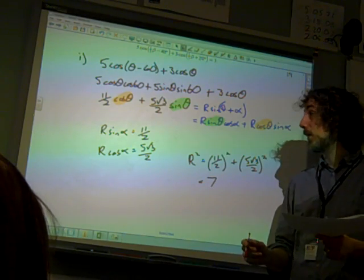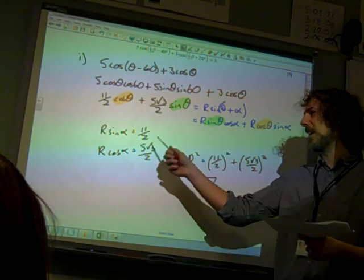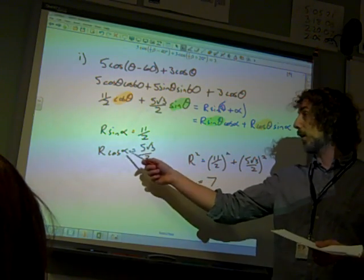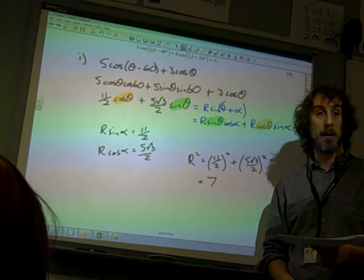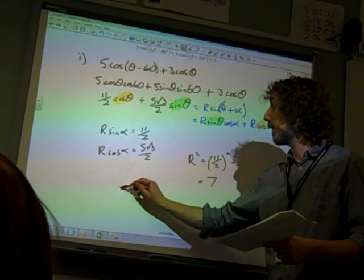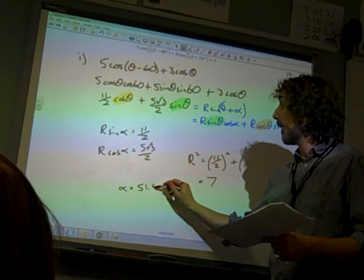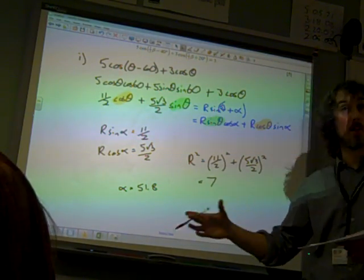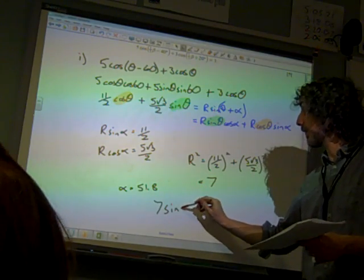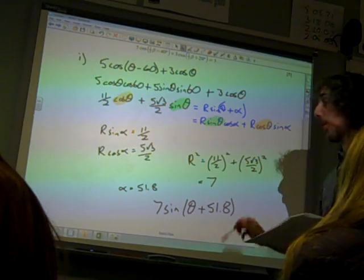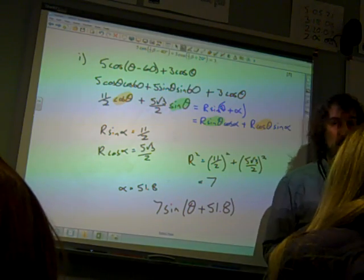The angle, if you then use 7 in this, so sin α is 11/14 and cos α is 5√3/14. Inverse sine, inverse cos of that. So you get 51.8. It did say write in the form. So you have to finish this off by writing in the form 7 sin(θ + 51.8). And there's your four marks.